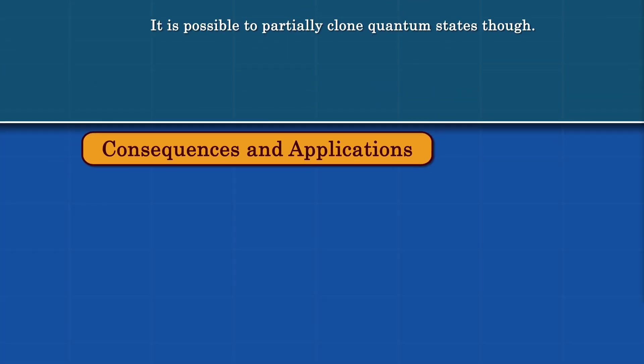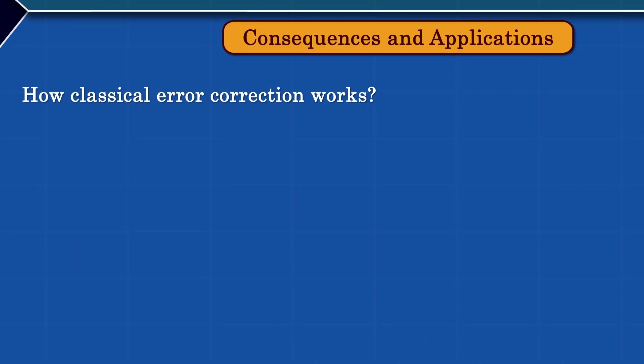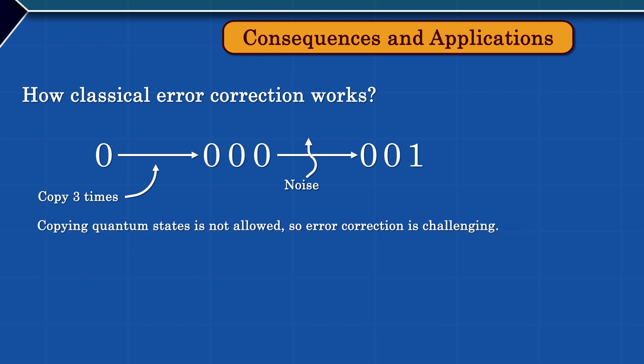In this final section, we'll review some of the consequences and applications of the no-cloning theorem. Error correction is vital in both classical and quantum computing and communication. The first step in error correction usually involves copying what you want to protect multiple times. Unfortunately, this is forbidden in quantum computing. However, people have devised a genius way of correcting quantum errors using entanglement.